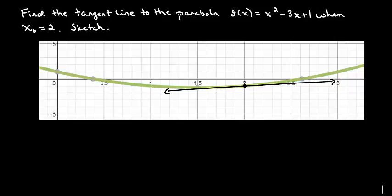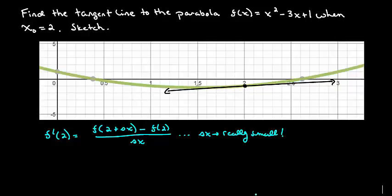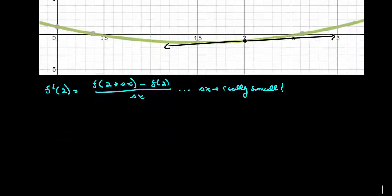So in order to get the exact slope, we need to do a little bit of algebra and we're going to use that definition for the derivative. So f'(2) should be equal to [f(2 + Δx) - f(2)] / Δx with the note on here that we're going to let Δx become really small.